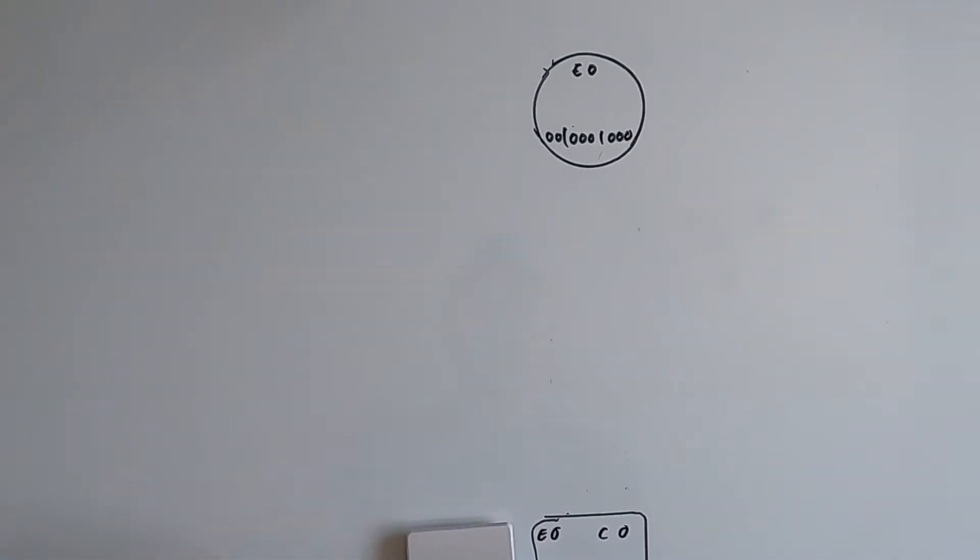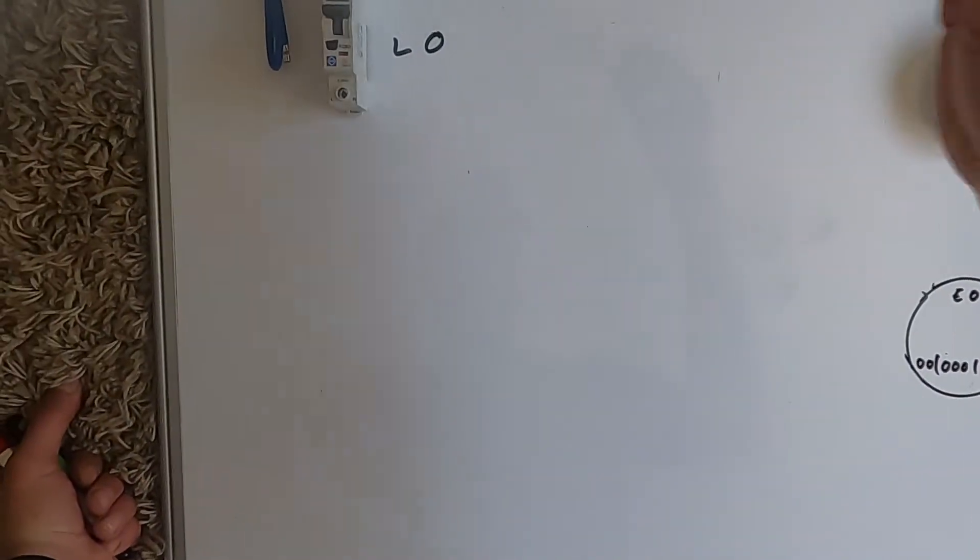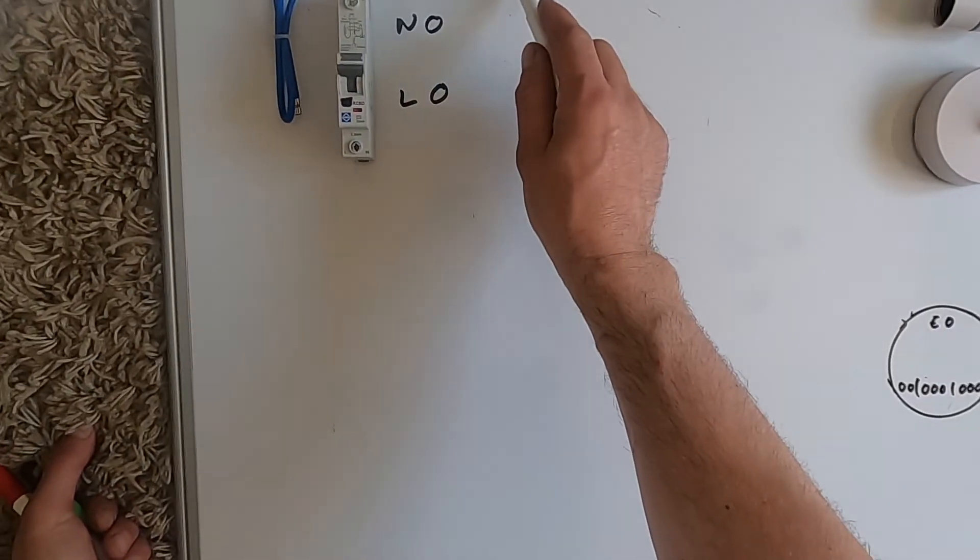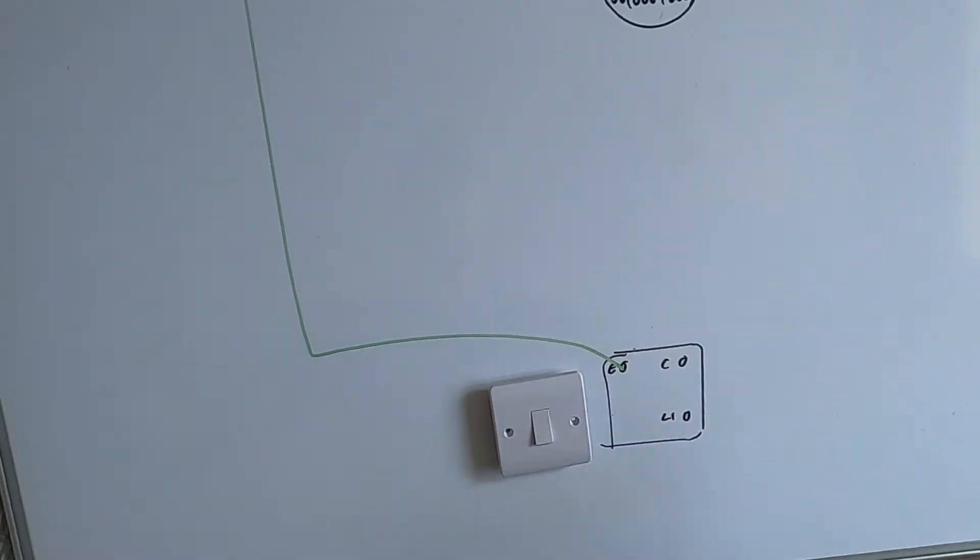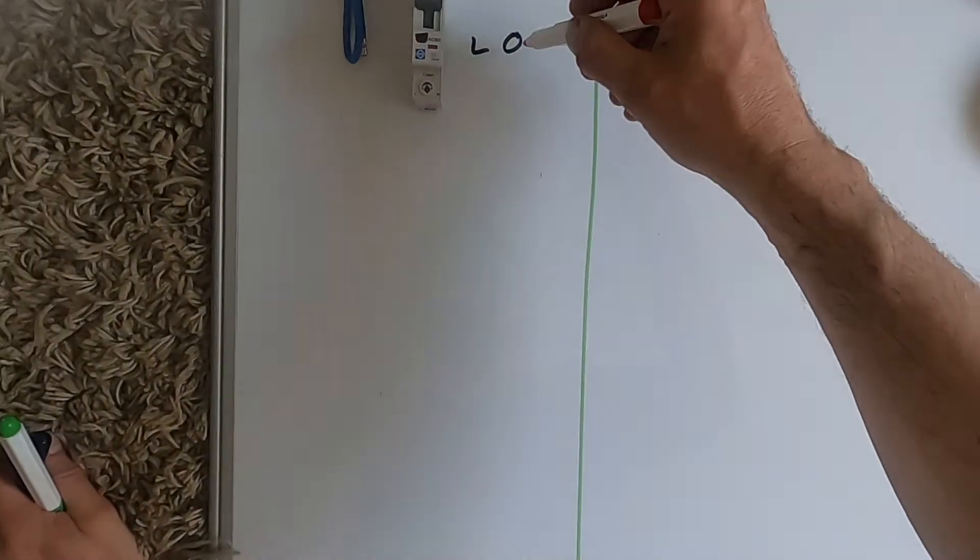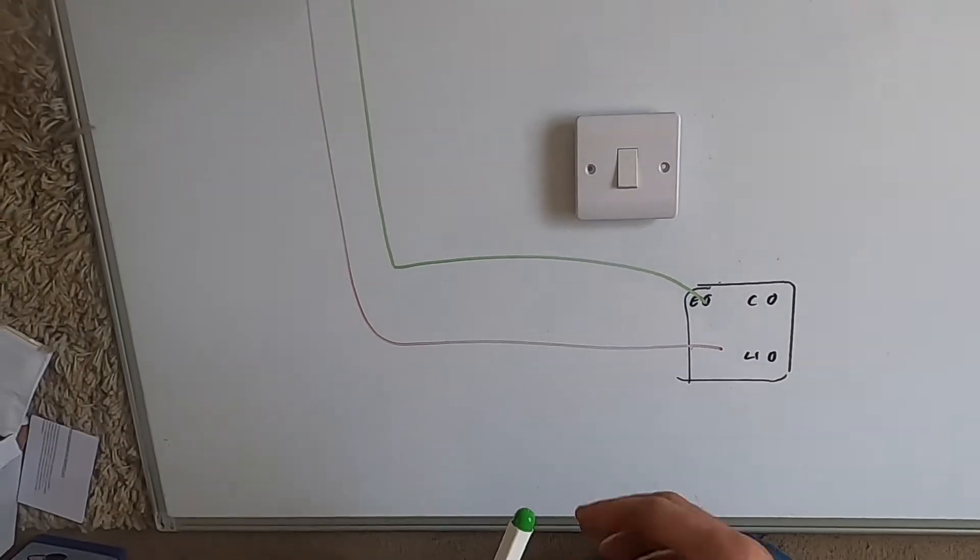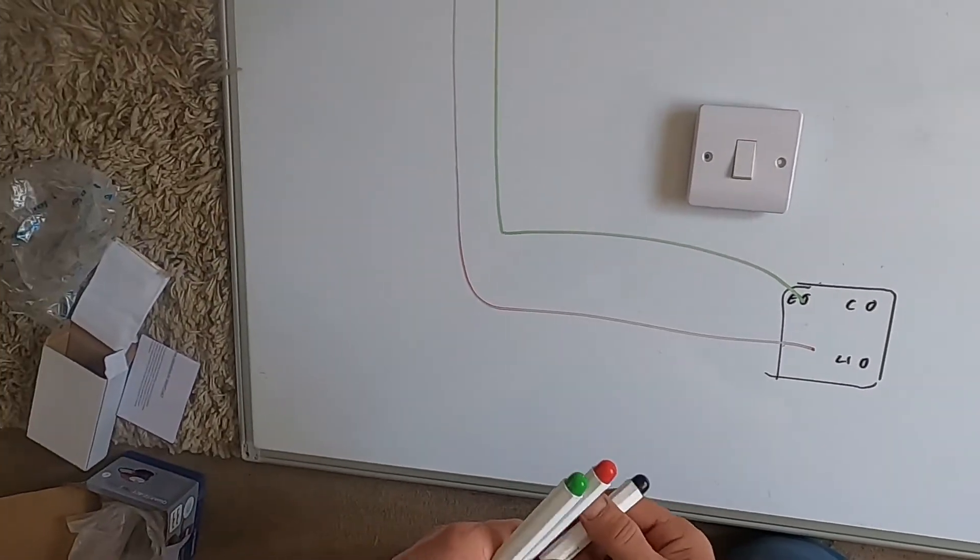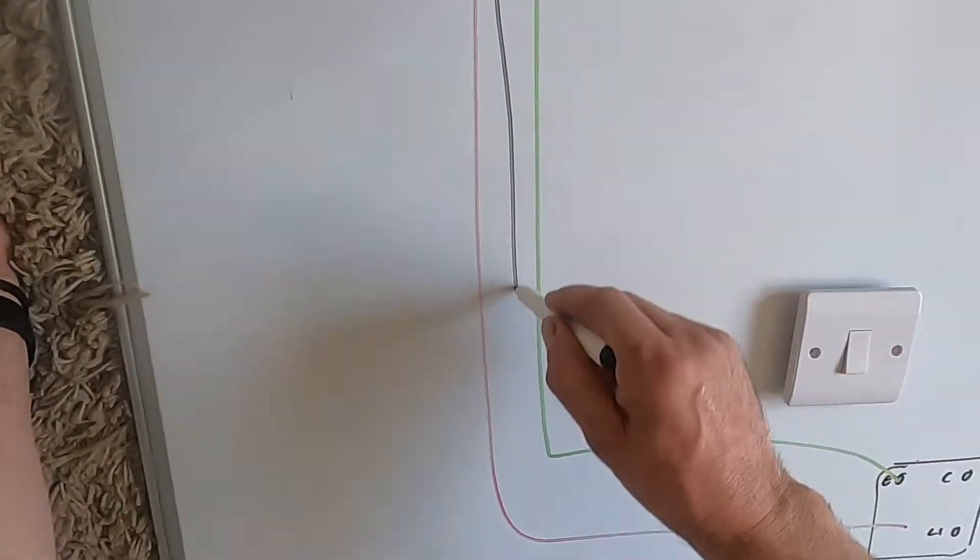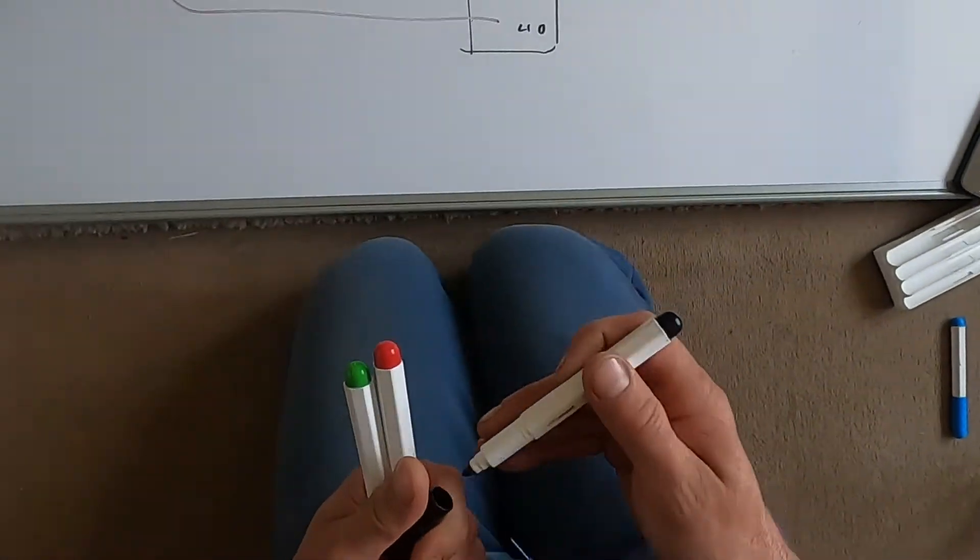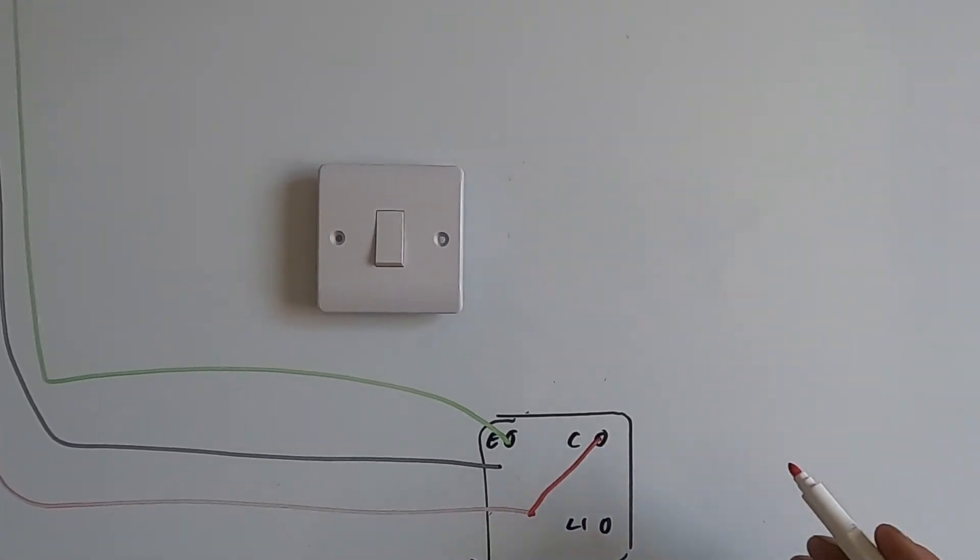So then the earth, instead of going from the light to the - instead of going to the light, go to the light switch. You take your earth to the switch like that, you take your live to the switch, and you take your neutral to the switch. And into the switch, you'll go to the common, so that's common straight away from the fuse board, so that will always be live.